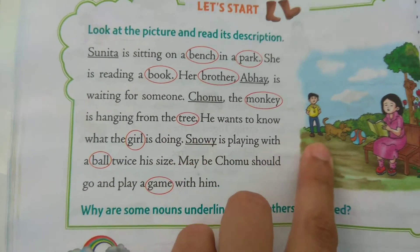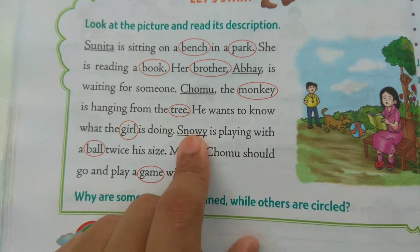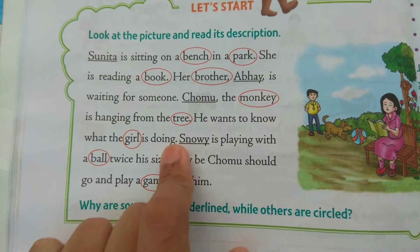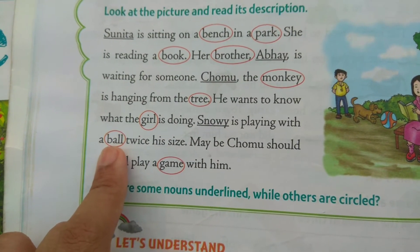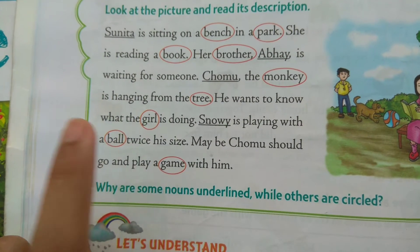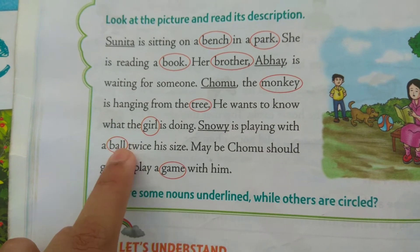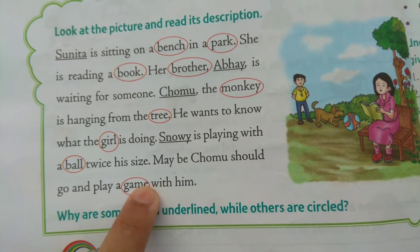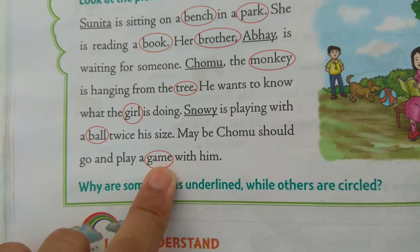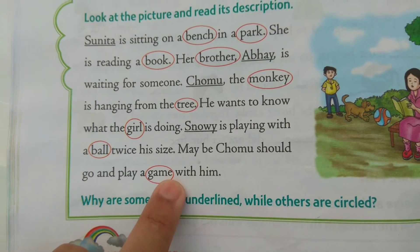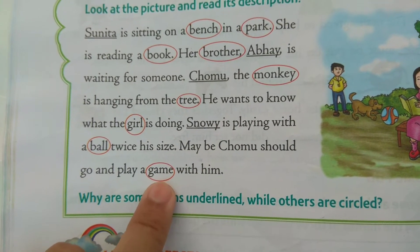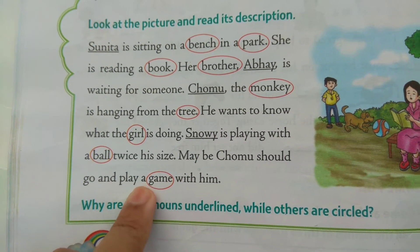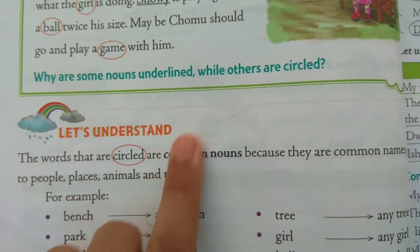Snowy is the dog's name. So, what is this? Proper noun. Ball is possible — any color is possible. What is this? Common. Game is possible. Catch-catch is possible, badminton, cricket is possible. What is this? Common noun.